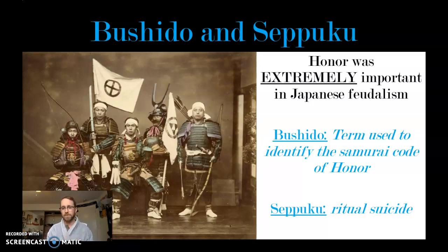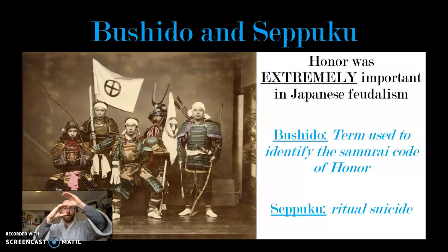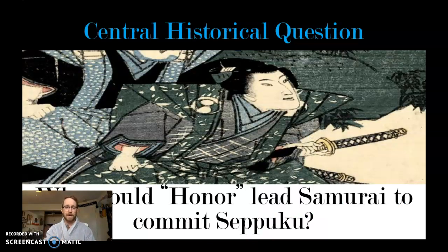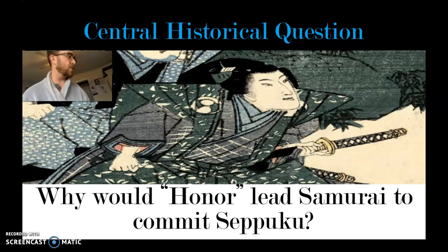Now let's get to seppuku. Seppuku — the practice — is known as ritual suicide. If a samurai was dishonorable to his lord, either a daimyo, the emperor, or a shogun, they were required culturally to perform this process of seppuku. The question we're going to be looking at is: why would honor lead samurai to commit seppuku? Which requires me to show you what seppuku actually looked like.